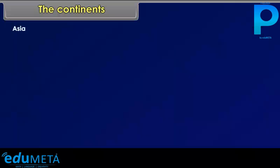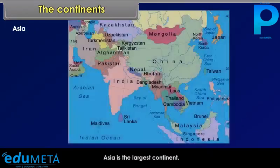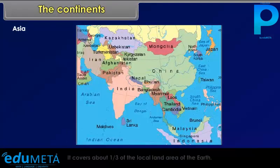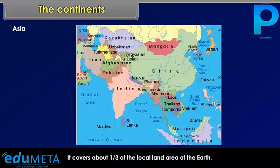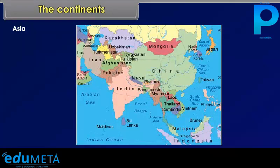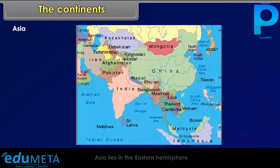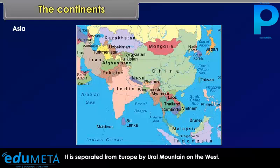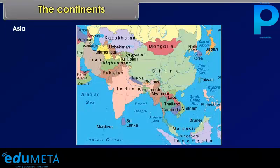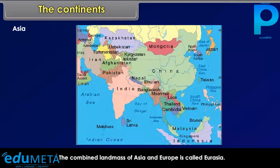Asia is the largest continent. It covers about one-third of the total land area of the Earth. Asia lies in the Eastern Hemisphere and is separated from Europe by the Ural Mountains on the west. The combined land mass of Asia and Europe is called Eurasia.